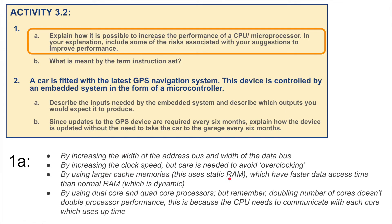By using larger cache memory, this uses static RAM rather than dynamic RAM, which has faster data access times than normal RAM. By using dual core or quad core processors — but remember, doubling the number of cores doesn't double the processing performance. This is because the CPU needs to communicate with each core, which does use up more time. Those are some possible suggestions to increase performance, along with the associated risks.